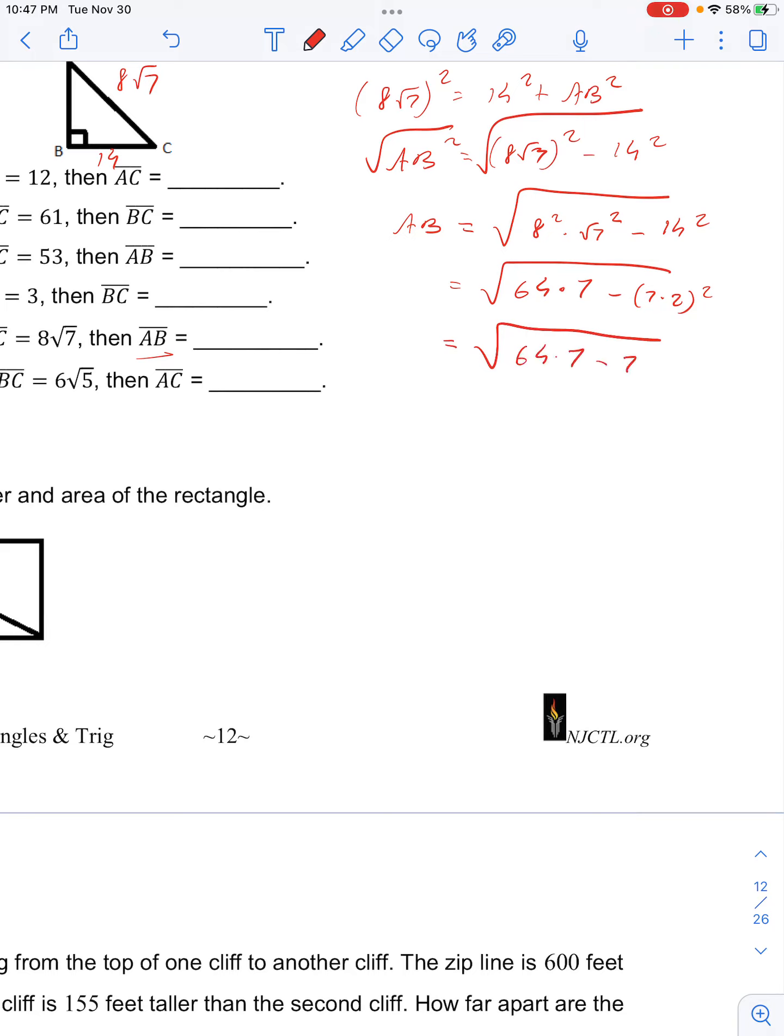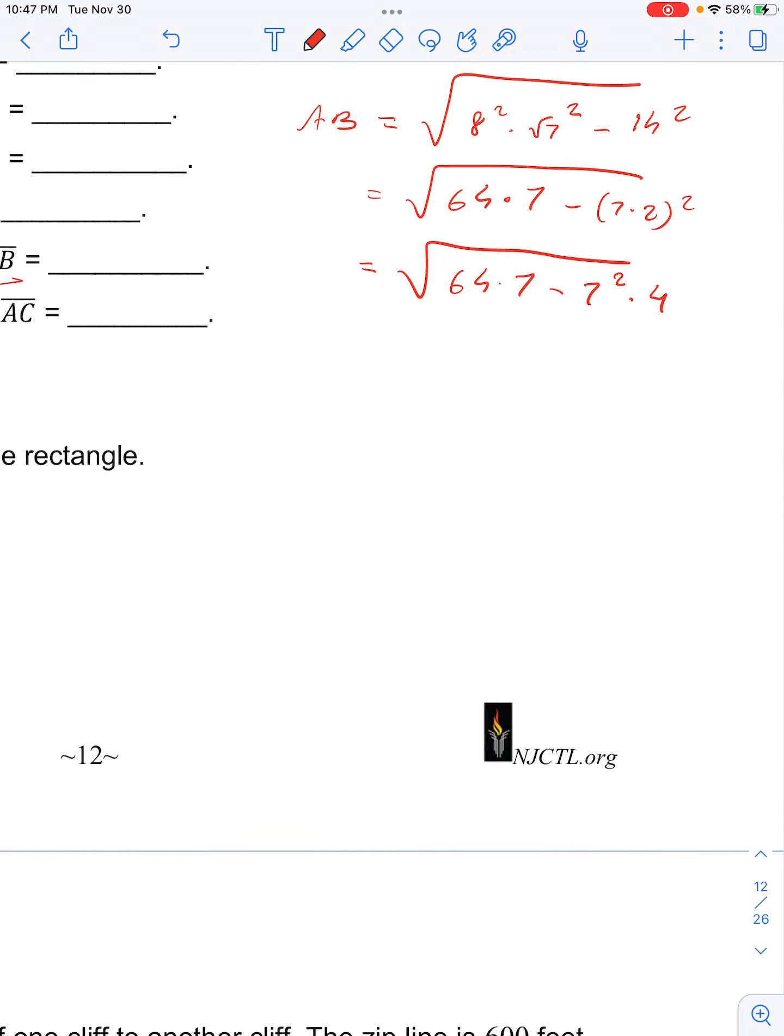So then we have radical 64 times 7 minus 7 squared times 2 squared is 4. Then if we pull out a 7, we have 7 times 4 left, so minus 28. Then 64 minus 28 is 36.